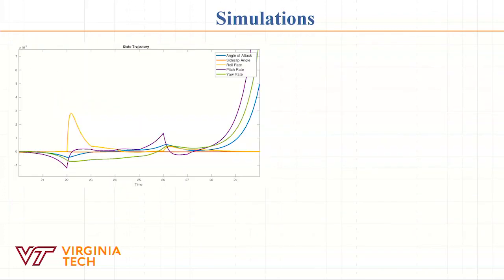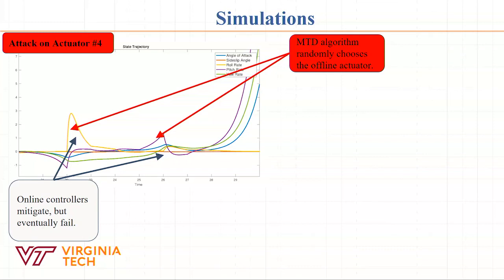Now let's see what happens when the attacker attacks. You remember in the previous scenario, the most favorable controller was number four. Let's say the attacker is really smart - he doesn't know I'm using a moving target defense framework, but he knows that the best controller is number four. So of course he or she will attack number four. The attacker attacks number four.